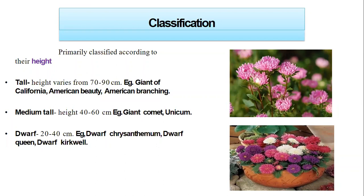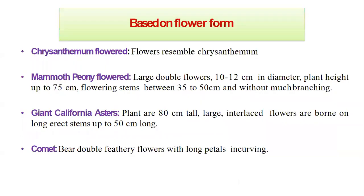As you can see in the pictures, the first picture is the tall variety and the second one is dwarf, which is grown in pots. Second classification is based on flower form — size and form of the flower. The first form is the Chrysanthemum flower type: flowers resemble chrysanthemum. The second form is Mammoth Peony flowers — large double flowers, 10 to 12 cm in diameter, plant height up to 75 cm, flowering stems between 35 to 50 cm, without much branching.